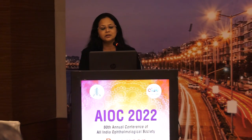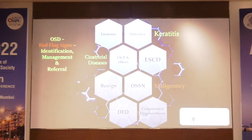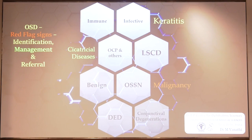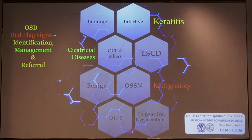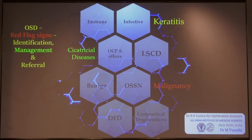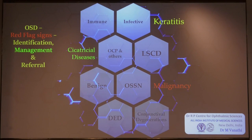When you look at ocular surface diseases, you can broadly categorize them into inflammatory or infective lesions of the ocular surface. They could be due to cicatricial diseases such as OCP or SJS, or secondary to limbal stem cell deficiencies. They can also be primarily due to malignancies — either benign or malignant neoplasias — and of course degenerative diseases such as dry eye disease and conjunctival degenerations.